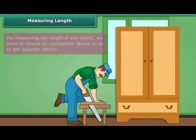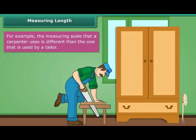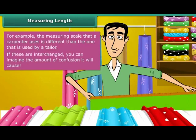Measuring Length. For measuring the length of any object, we need to choose an appropriate device so as to get accurate results. For example, the measuring scale that a carpenter uses is different than the one that is used by a tailor. If these are interchanged, you can imagine the amount of confusion it will cause.